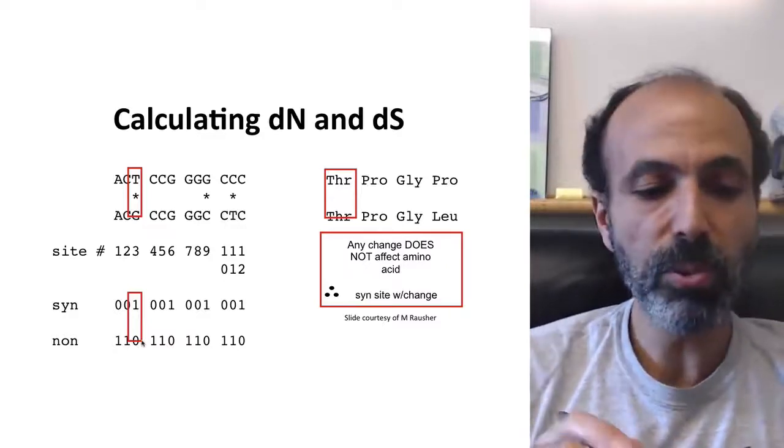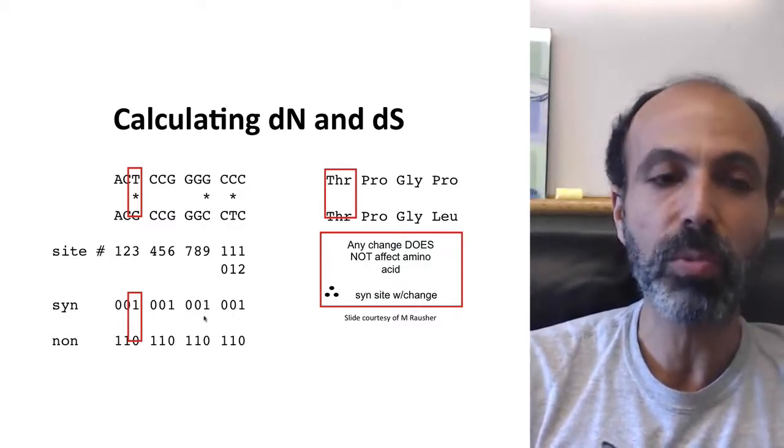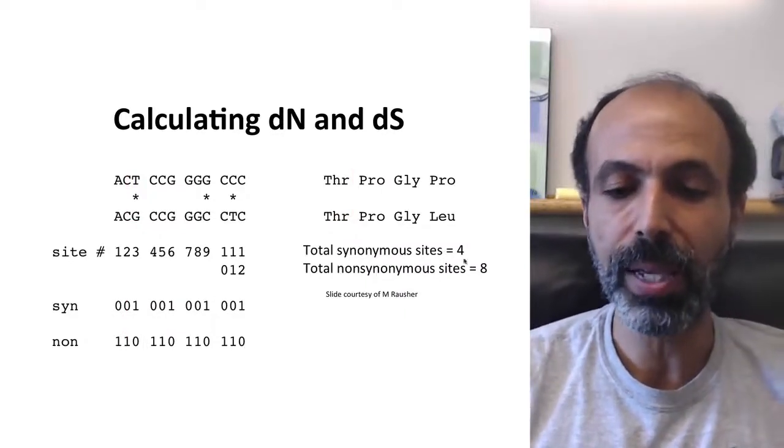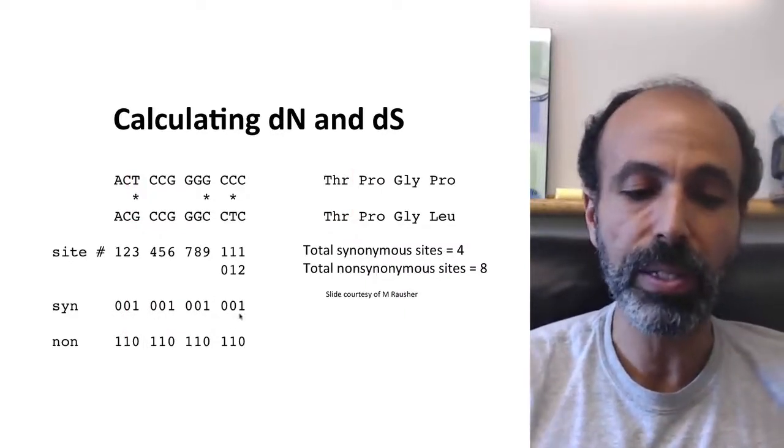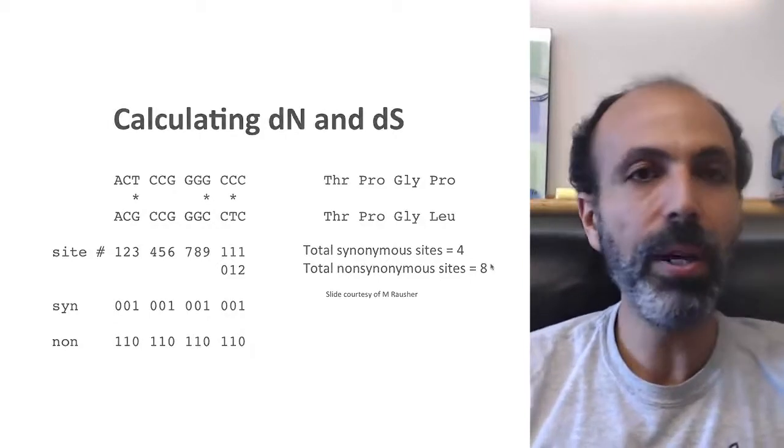So what we do is we tally up for this entire sequence, how many potential synonymous changes were there, how many potential non-synonymous changes were there. And what we see is the total number of synonymous sites is 4. It's just the total of these numbers. The total number of non-synonymous sites is 8.